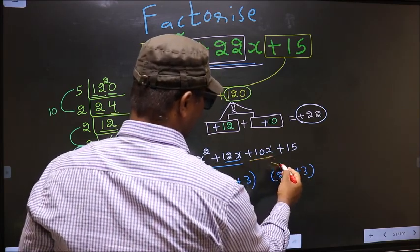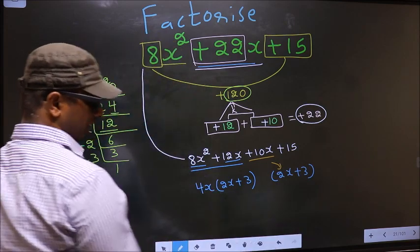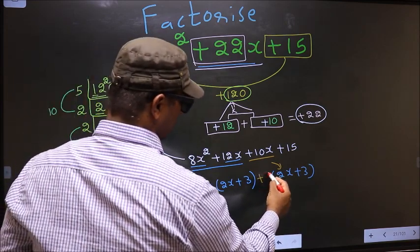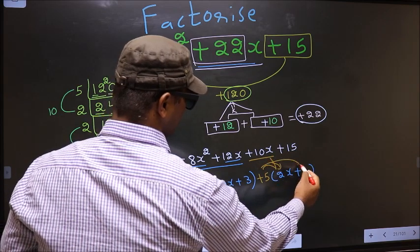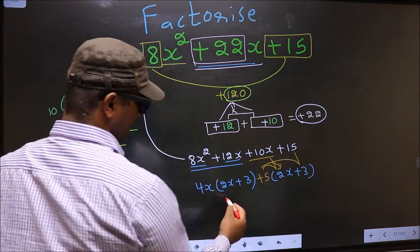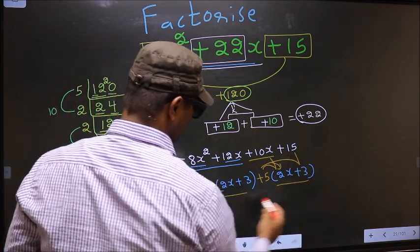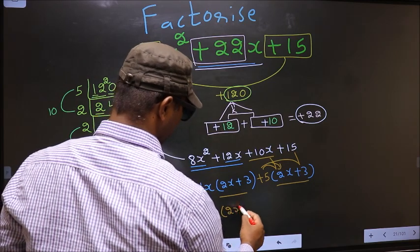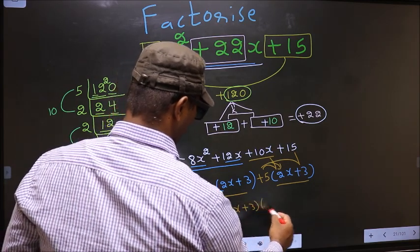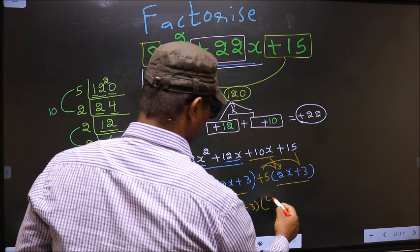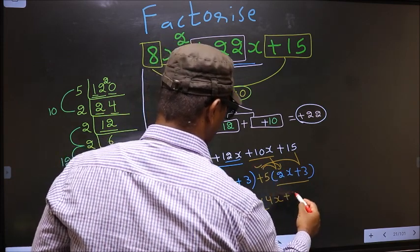From this, 2x has gone inside, so outside you get plus 5. Even if you multiply and see, still you get the same thing. Now, you take out 2x plus 3 common. So here we have 4x and here we have plus 5.